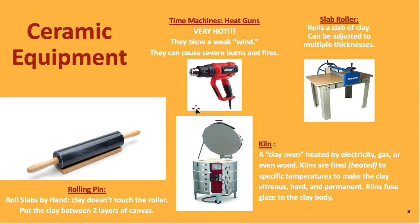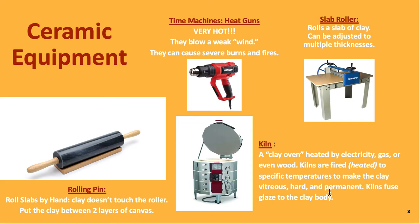The equipment — you're already familiar with heat guns. You've seen the slab rollers in the room; we're not going to use those, but they're just like a big rolling pin. Do not let the clay touch the roller; always put it between two layers of canvas so it won't stick. The kiln is your clay oven. The proper term is to fire the kiln, which means heating it to a specific temperature to make the clay vitreous, hard, and permanent. Kilns also fuse glaze to the clay body.